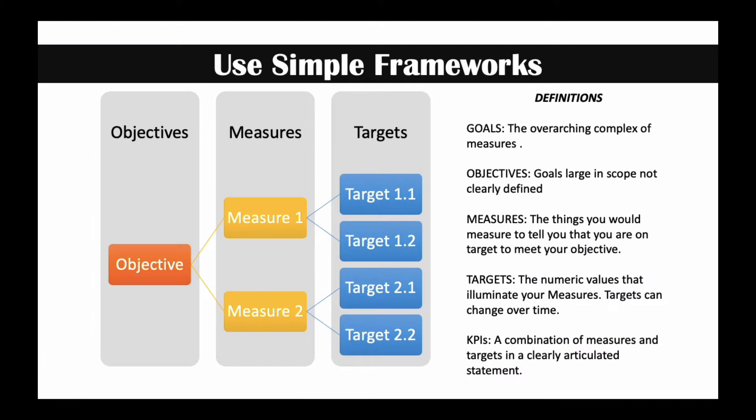My suggestion is that we use a simple framework defined by these definitions. Goals are an overarching complex of measures — so goals are a big thing. Goals normally have components, and those components are defined as objectives, measures, targets, and then we can pull them together into a KPI if we want to, to give us a clear statement.